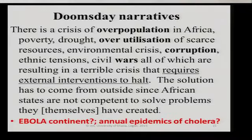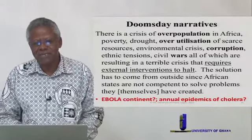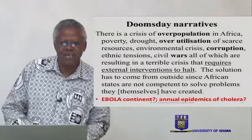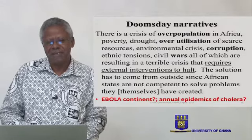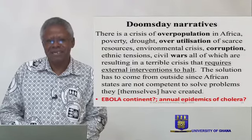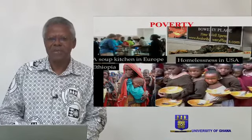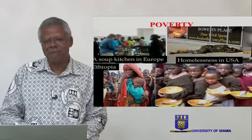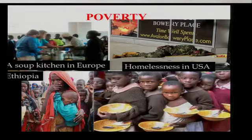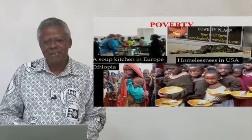There are those people who say Africa is doomed — a doomsday narrative: a continent of suffering, various kinds of crisis, overpopulation, overutilization of scarce resources, environmental crisis, corruption, ethnic tensions, wars, and so on. To the extent that the argument is that if external intervention does not come in, this continent is doomed. Africa is supposed to be the poor continent, but is it only in Africa that we find poor people? The picture speaks for itself.